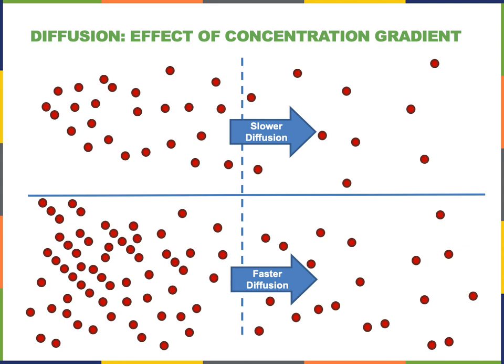The concentration gradient has a major effect on the speed of diffusion. If there is a larger concentration gradient, that will lead to an increased rate of diffusion.